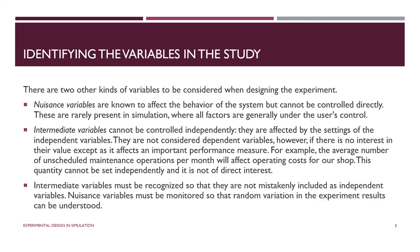There are two types of variables in experimental design that are not quite factors and not quite responses. We don't worry about them as much in simulation because in real life these variables can't be controlled — but in simulation, everything is controlled. Nuisance variables affect system behavior but can't be controlled directly, and intermediate variables are affected by the factors but we can only measure them, not control them.